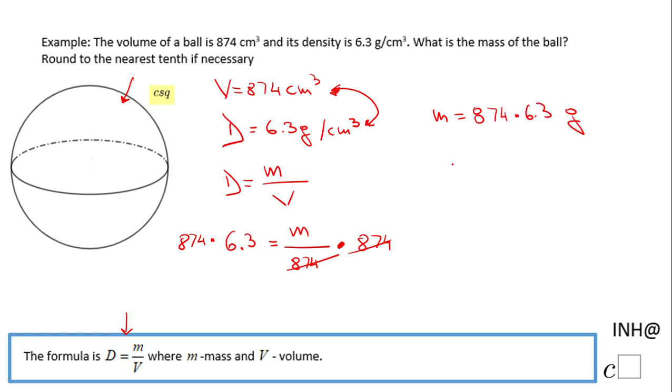So let me grab a calculator and do this multiplication, and that will be 5,506.2 grams. So the mass of this ball that has a volume of 874 cubic centimeters and a density of 6.3 grams per centimeter cubed is 5,506.2 grams.